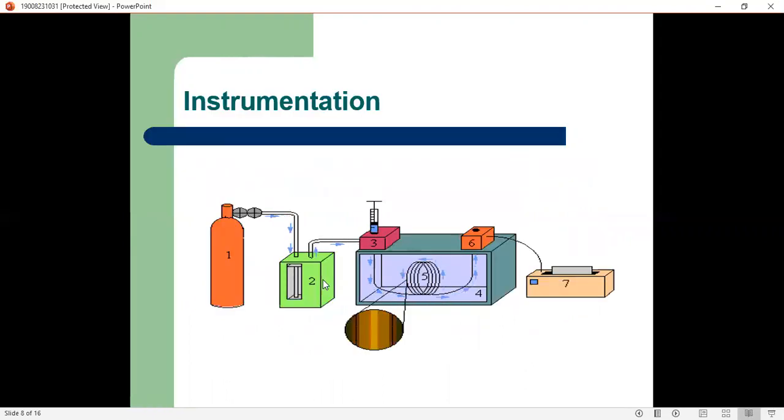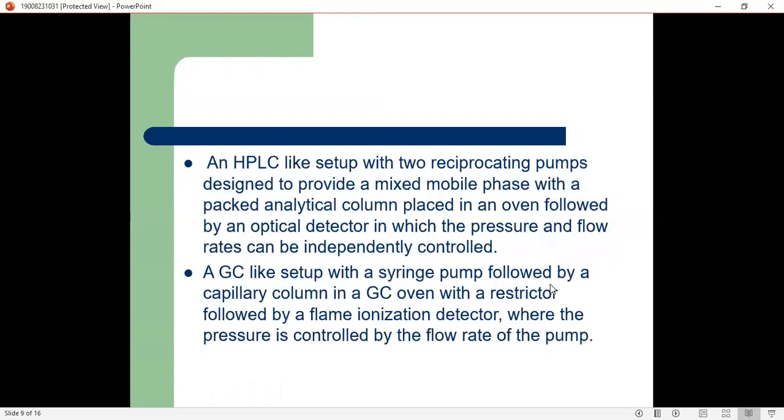This is a diagram showing a cylinder, oven, and injector. The fluid passes from the cylinder to the oven and then through a high pressure liquid chromatography-like setup with two reciprocating pumps designed to provide a mixed mobile phase with the packed analytical column.